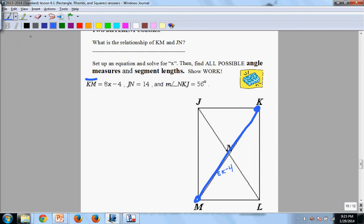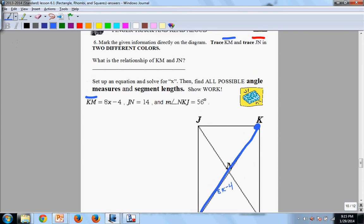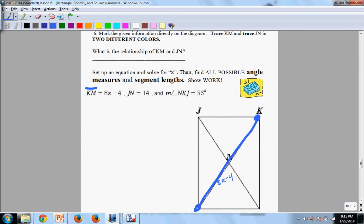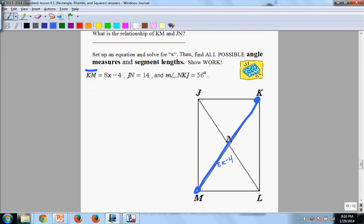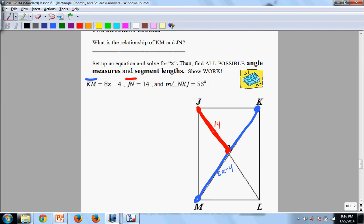And then here, we also want to trace JN. We're going to do that in red. And that's 14. So ask yourself, what is the relationship between the blue segment and the red segment? Write that relationship out.